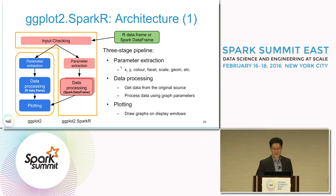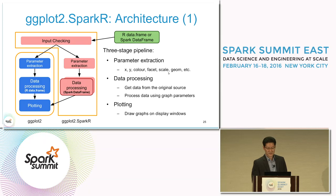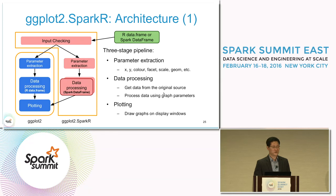First, the parameter extraction stage extracts input-related data including x, y, color, facet, scale, and geom. The data processing stage gets the data from the original source and processes it using graph parameters.